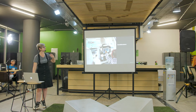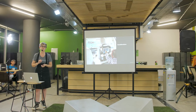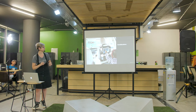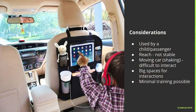If you're designing for an app or something that would go on the back of a car seat, what kind of considerations would there be? The buttons need to be quite large because it's difficult to press. It needs to be used by a child or a passenger — you need to reach and it's not stable, you have a moving car, shaking, difficult to interact, so big spaces for interactions. And if it's on the App Store, you'll have minimal training possible.